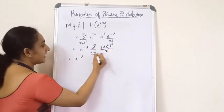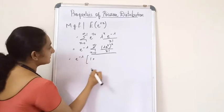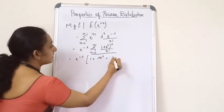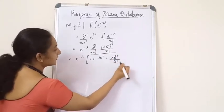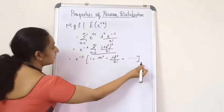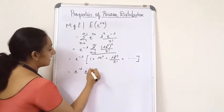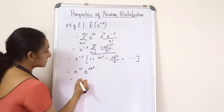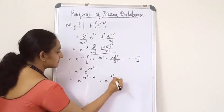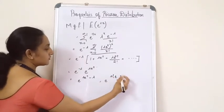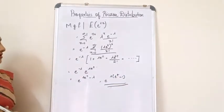Expanding the series: 1 + λe^t + (λe^t)²/2! + … = e^(λe^t). So the MGF = e^(−λ) · e^(λe^t) = e^(λe^t − λ) = e^(λ(e^t − 1)). This is the MGF for the Poisson distribution.